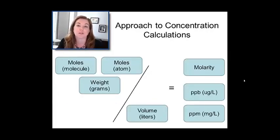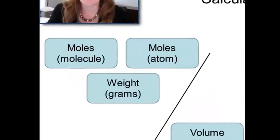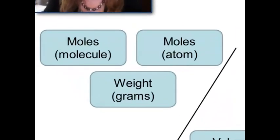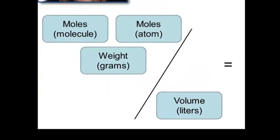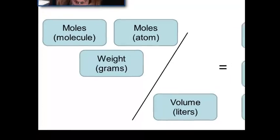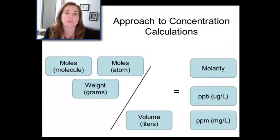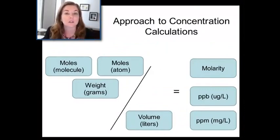To do a concentration calculation, you're going to have something on the top, which is a measurement of the mass, could be a measurement of the moles, or the volume of the thing you're interested in. For example, in the case of lead in baby toys, it's going to be the amount of lead — either micrograms or moles of lead. Then we divide by how much solution volume we've got, because it's a very different matter to have a milligram of lead in a liter versus a milligram of lead in only a milliliter. So you get an amount per volume, and that's the concentration.